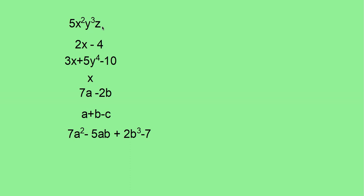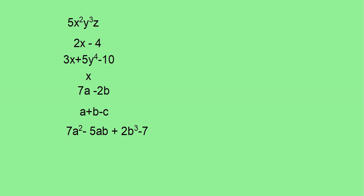Here, you have some algebraic expressions given. Look at the first expression: 5x square y cube z. Tell me, how many terms are there? Here, this can be considered as 1 term. And, coefficient of this term is 5 and variables are x, y and z. Now, look at the second one. How many terms are there? Here, you have 2 terms. Next, 3 terms. Here, 1. And, 7a minus 2b, 2 terms. a plus b minus c, 3 terms. 7a square minus 5ab plus 2b cube minus 7, 4 terms.